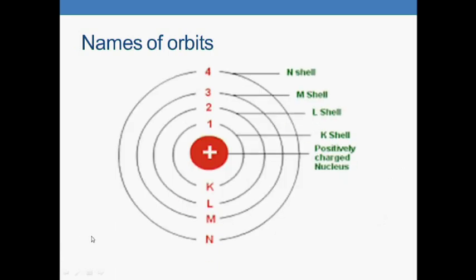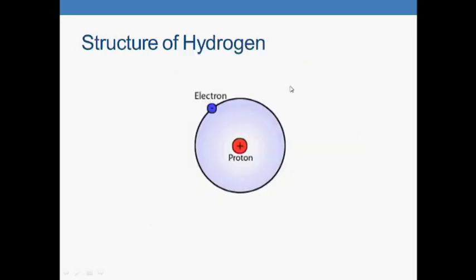These orbits or energy levels are named as K, L, M, and N. The nearest shell to the nucleus is the K shell, while the second one is L shell, third one is M, and fourth one is N shell. As an example, we take the structure of hydrogen.